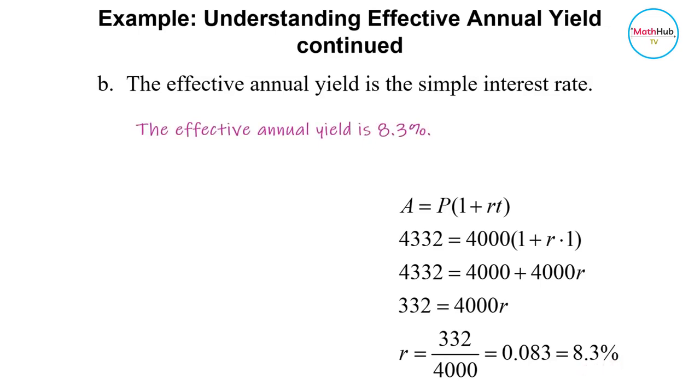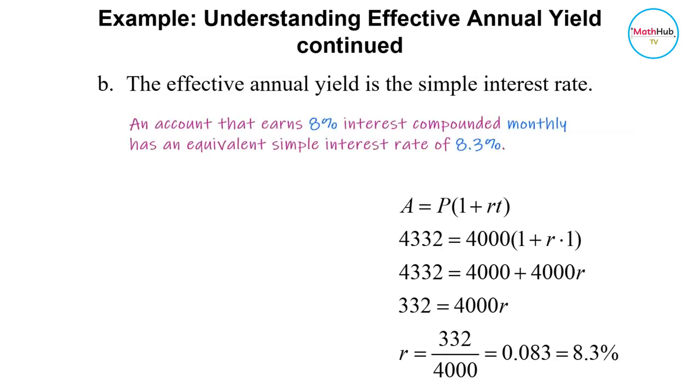This means that an account that earns 8% interest compounded monthly has an equivalent simple interest rate of 8.3%. So the two are just the same.